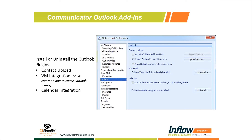For existing appointments already booked, the automated option will make its best guess about which call handling mode to use. For new appointments you create, you have control over choosing 'Out of Office' or 'In a Meeting.' In most cases, the automated option will default to 'In a Meeting' mode unless you specifically selected 'Out of Office' as the Outlook mode, in which case it will use that.